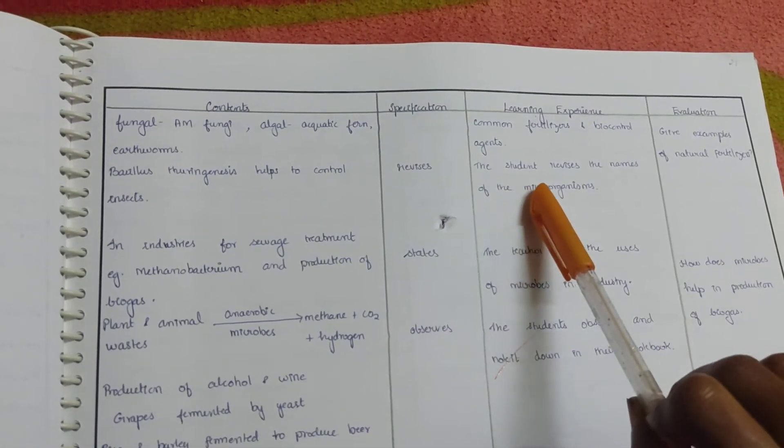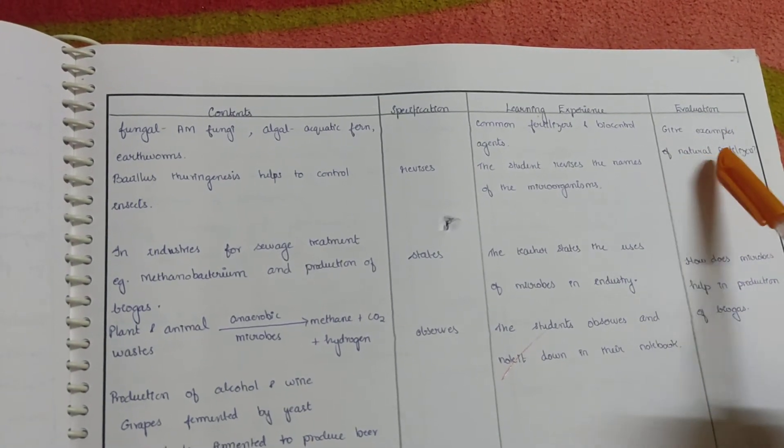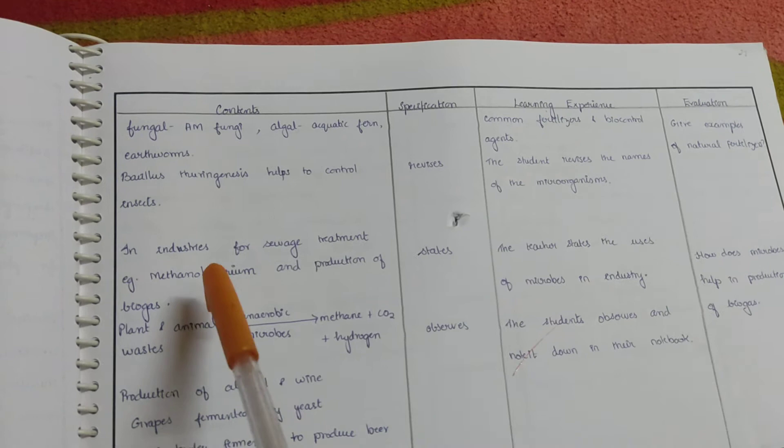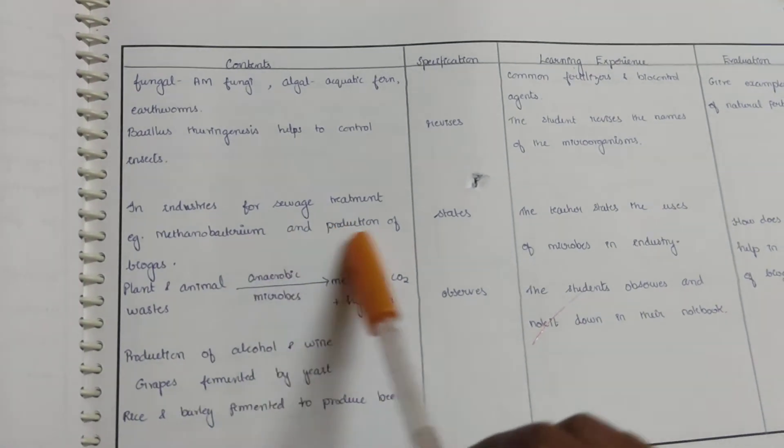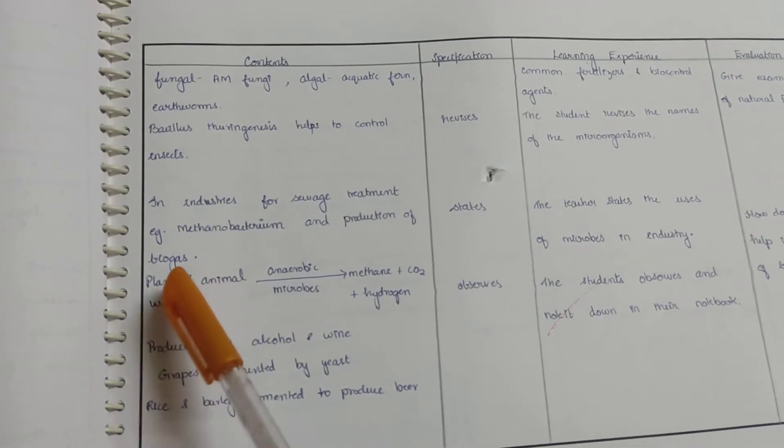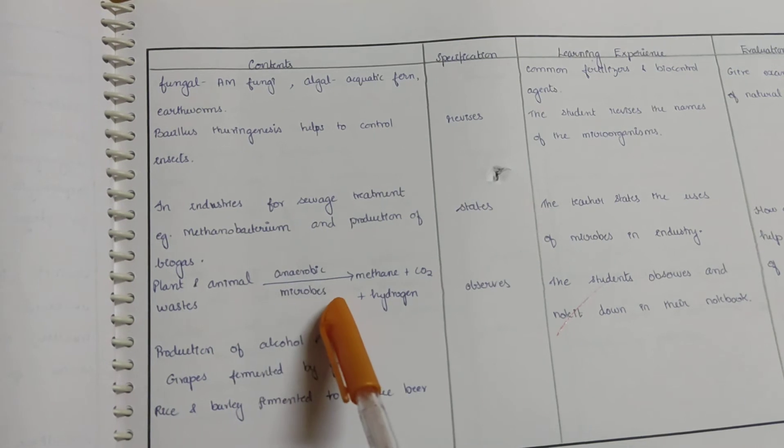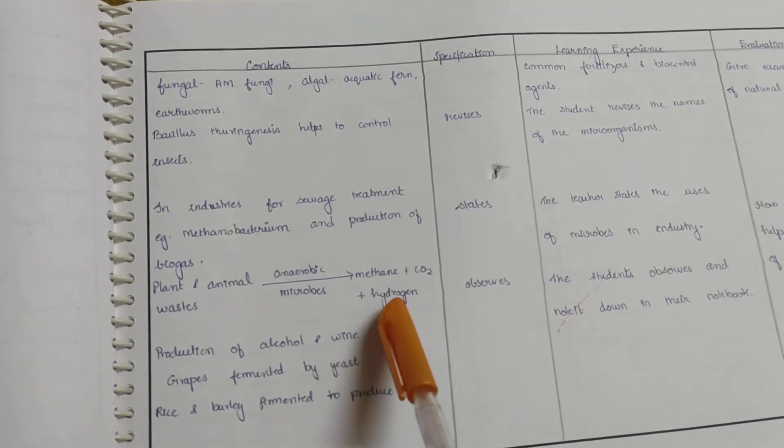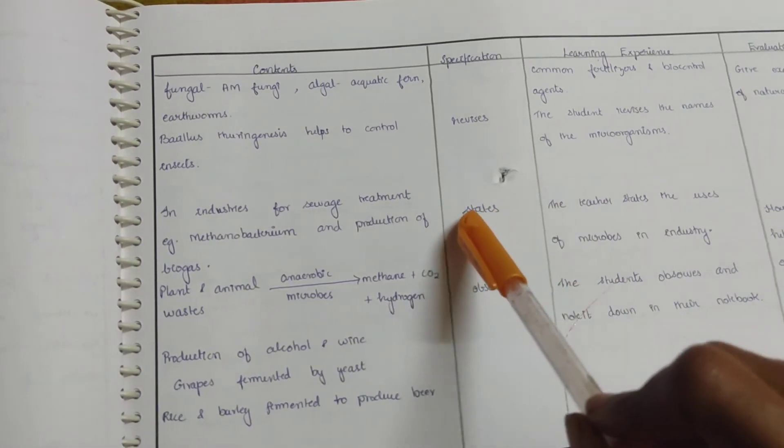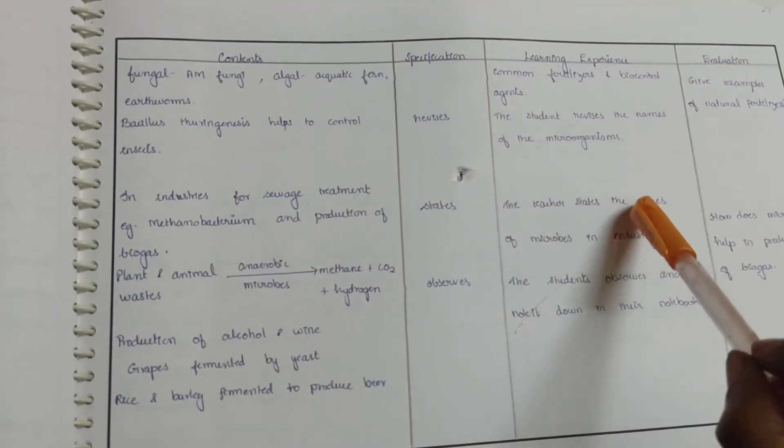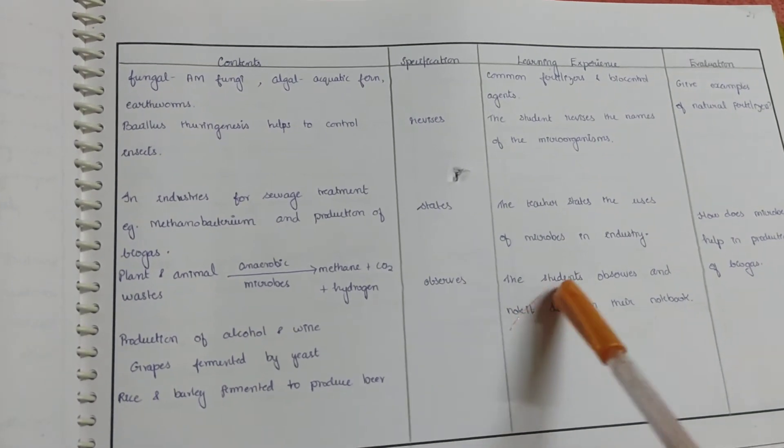Evaluation: give examples of natural fertilizer. In industries, for sewage treatment, example Methanobacterium and production of biogas. Plant and animal in the presence of anaerobic microbes gives methane, carbon dioxide, and hydrogen. Here the teacher is stating the uses of microbes in industry. The student observes and notes it down in their notebook.